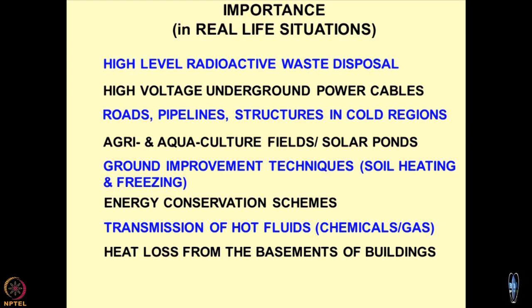Then come agri and aquaculture fields and solar ponds. The design of solar ponds is based on the thermal properties of geomaterials, because the whole idea is to grow aquaculture or agriculture, and unless proper temperatures are maintained within the ponds, you cannot grow shrimps, lobsters, and so on. When you design these ponds, the thermal properties of the geomaterials — particularly the foundations of the ponds — become very important. They should not allow heat migration to occur, to maintain optimum temperature for the culture of aquatic life.